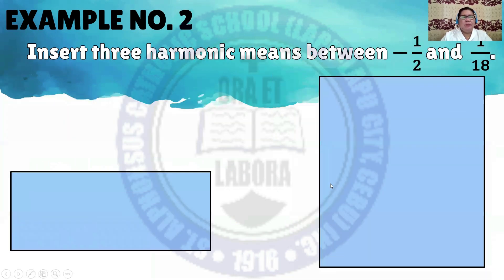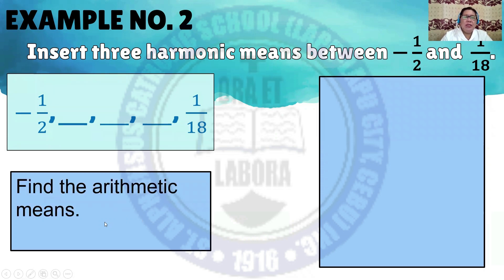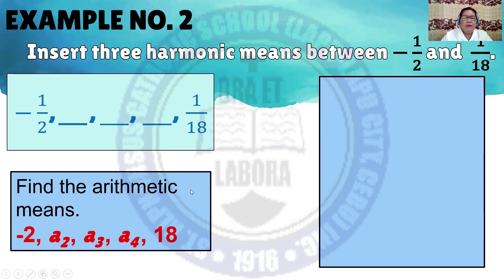Next example. Insert 3 harmonic means between negative 1/2 and 1/18. This will be the harmonic sequence: negative 1/2, then insert 3 harmonic means, and the last term is 1/18. What you will do is find the arithmetic means by looking at the denominators. You can use negative 2 and, for the 5th term, 18.